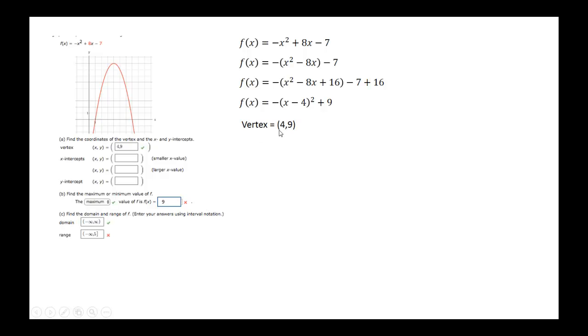So the vertex will be at 4, 9, since this is now in vertex form, f(x) equal to a times x minus h squared plus k.